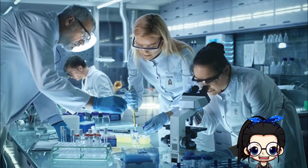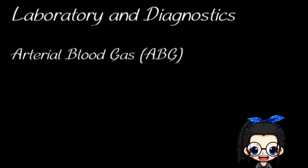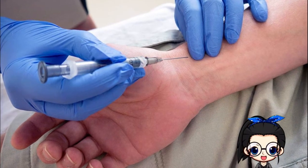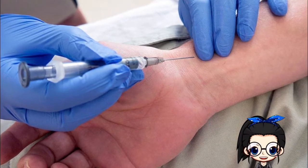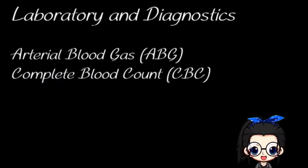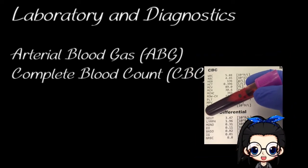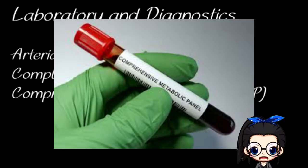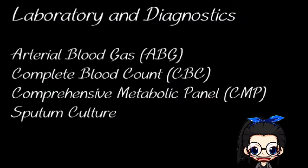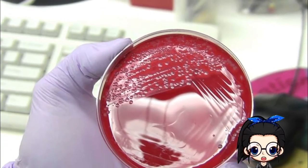Laboratory and diagnostic data assist the healthcare team in determining the severity of hypoxemia and underlying cause. An arterial blood gas determines the pH, partial pressure of arterial oxygen, carbon dioxide, and bicarbonate — this determines the extent of hypoxemia and the course of action. Also, a complete blood count to determine a potential cause; for example, an elevated white blood cell count could indicate an infection like pneumonia. A comprehensive metabolic panel, otherwise known as CMP, to determine electrolyte imbalances and kidney function. And a sputum culture will assist in determining the underlying microorganism for antibiotic therapy, particularly if the patient has a productive cough.